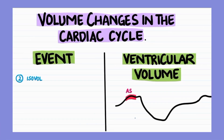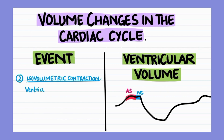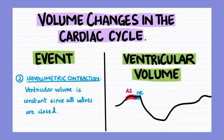Moving on to the second event of the cardiac cycle, that is isovolumetric ventricular contraction, which is represented by the area highlighted in blue on the graph. During this phase, the ventricular volume is constant since the mitral valve closes just before isovolumetric contraction and the semilunar valves have not yet opened.